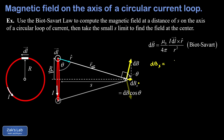The expression for dbx is the magnitude of db multiplied by cosine theta, giving mu-naught over 4-pi times I times the magnitude of dl crossed into r-hat, divided by r squared. The magnitude of the cross product is dl times the magnitude of r-hat — which is one — times the sine of the angle between them. Since dl points out of the page and r-hat is in the page, the angle between them is 90 degrees, so sine of 90 reduces to one. Since r is the hypotenuse of a right triangle, r squared equals big R squared plus s squared.